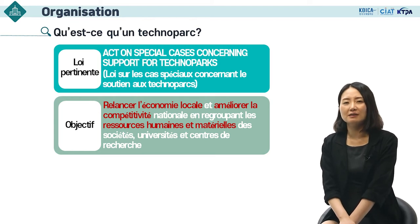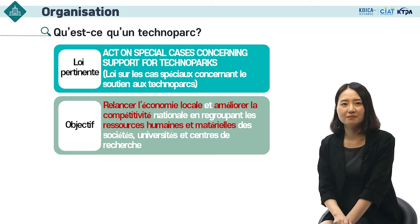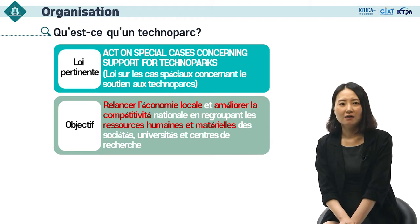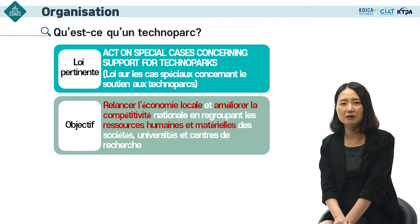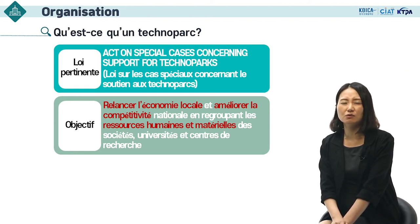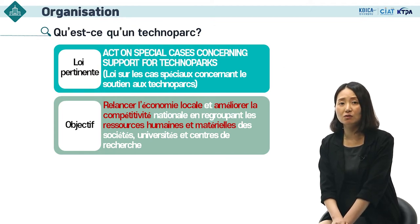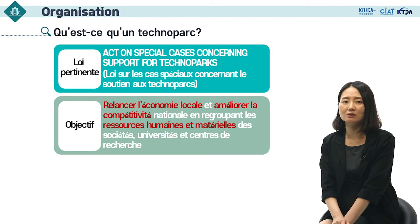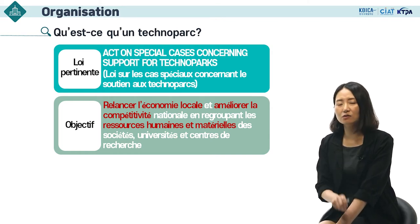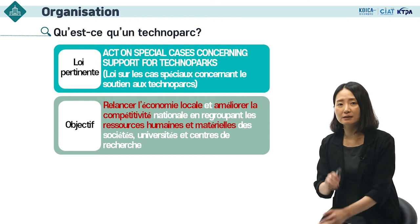Qu'est-ce qu'un technoparc en termes légaux ? C'est une institution établie basée sur la loi sur les cas spéciaux concernant le soutien aux technoparcs. Son objectif principal est de relancer l'économie locale et améliorer la compétitivité nationale en regroupant les ressources humaines et matérielles des sociétés, universités et centres de recherche. Le technoparc et la notion de clustering sont souvent utilisés ensemble, regroupant géographiquement les écosystèmes industriels sur la chaîne de valeur.